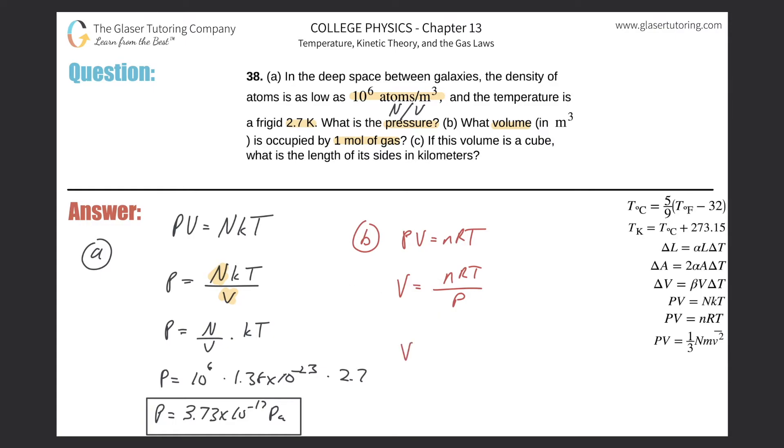And now all we need to do is know these variables in order to find the volume. So do we know the number of moles? Yeah, it said one, right? Do we know R? Sure, that's 8.31. Okay, if we're using then cubic meters and Pascals, both for volume and pressure respectively. The temperature then is going to be the 2.7 Kelvin, and then divide this now by the pressure we just found of 3.73 times 10 to the negative 17th. And now the volume here will be 8.31 times 2.7 divided by 3.73 times 10 to the negative 17th. And here we have now the volume will be 6.015 or 6.02 times 10 raised to the 17th. Alright, and that'll be in terms of cubic meters.